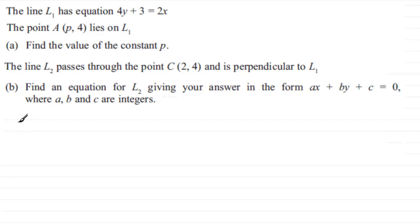If you've got any point that lies on a curve or line then we know that that point should satisfy your equation. So we've got the equation for L1 that is 4y plus 3 equals 2x and we now know that because this point lies on it, it satisfies that equation.